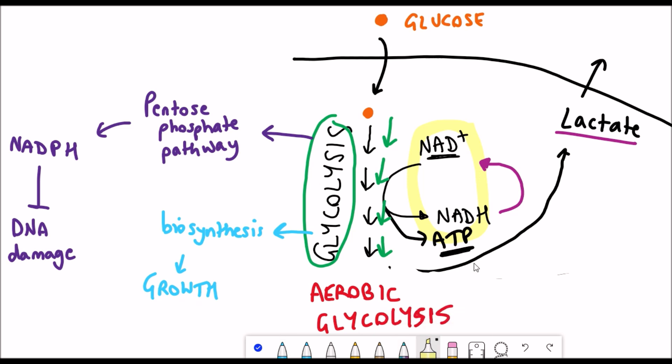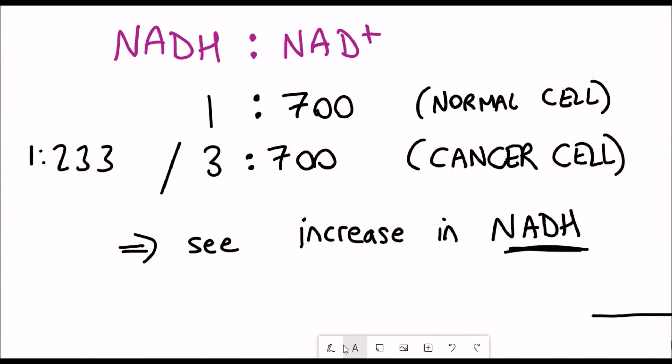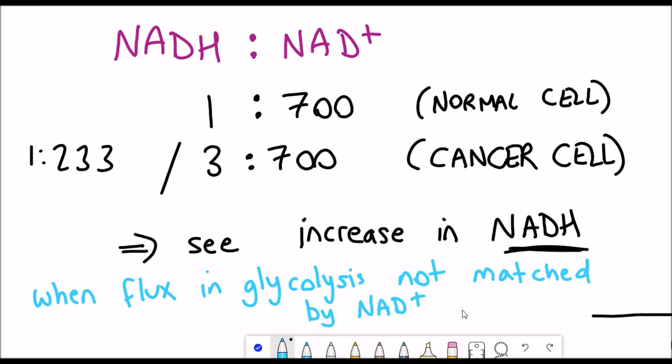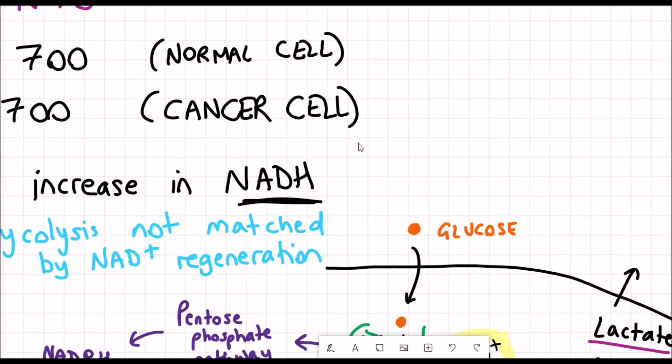The problem is that glycolysis uses NAD+ and forms NADH. While you can still regenerate that NAD+ by converting the products to lactate, you don't regenerate as much as you would do if it went through the mitochondrial pathway.